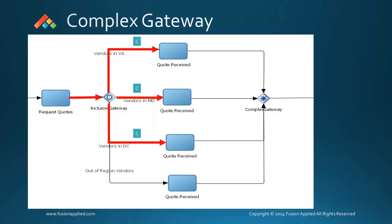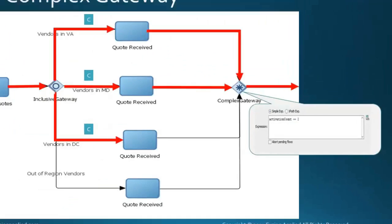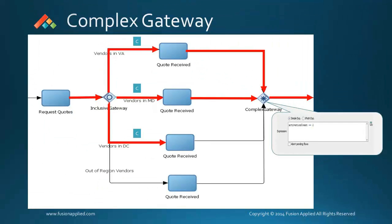In an inclusive gateway, at the merge end of the gateway the token waits until all other tokens arrive. In a complex gateway you have a little more control over this — you can define an expression in the merge gateway so that the token can leave the gateway even if all the tokens have not arrived.